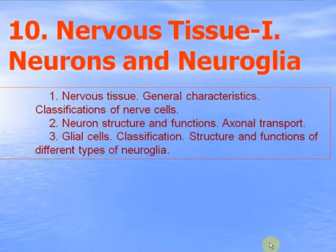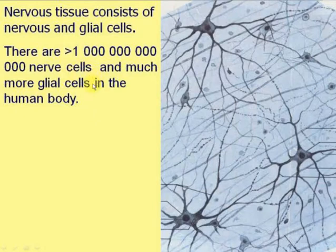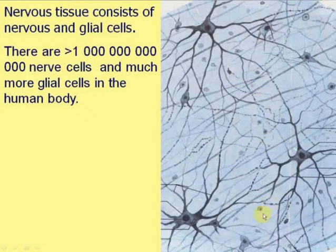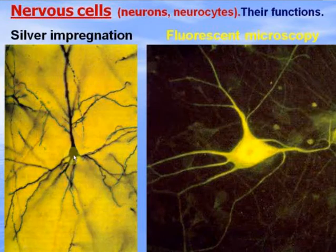This is the first lecture on nervous tissue, neurons and neuroglia. The main questions of the lecture: nervous tissue consists of nervous and glial cells. There are a lot of nerve cells but much more glial cells in the human body. You see the tremendous network of neurons connected by their fibers, and much more small glial cells between them. Glial cells occupy the whole space between nerve cells and no intercellular matrix is available.